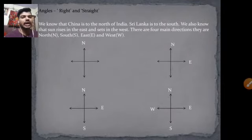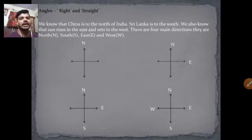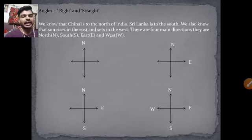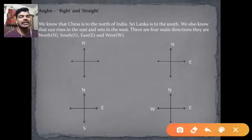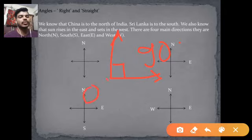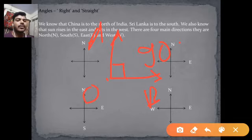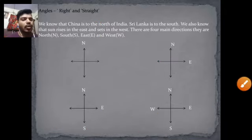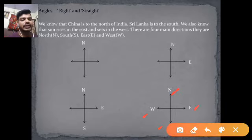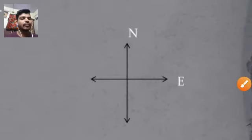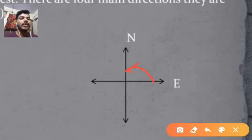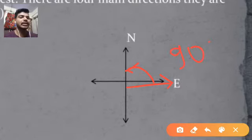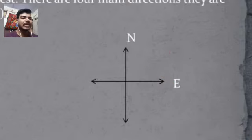Now moving further to angles. In this chapter, we will learn about different kinds of angles. We have right angle and straight angle. A right angle is equal to 90 degrees. For example, angle AOB equals 90 degrees — that is a right angle. Using compass directions: if we are heading towards east and rotate anti-clockwise by 90 degrees, we will head towards north. That rotation is a right angle.